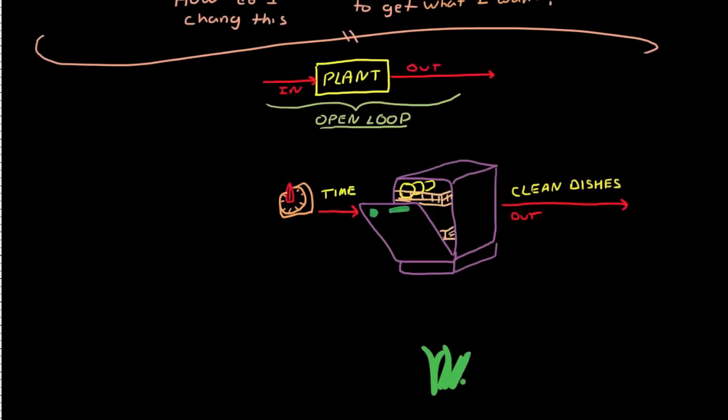Another common example of open-loop control is a sprinkler system for your lawn. In this control system, the system output is the moisture content of the soil. Again, the user sets the timer, which controls the amount of time to run the sprinklers. And while the sprinklers are running, the plant, which is the grass in this case, is being watered.